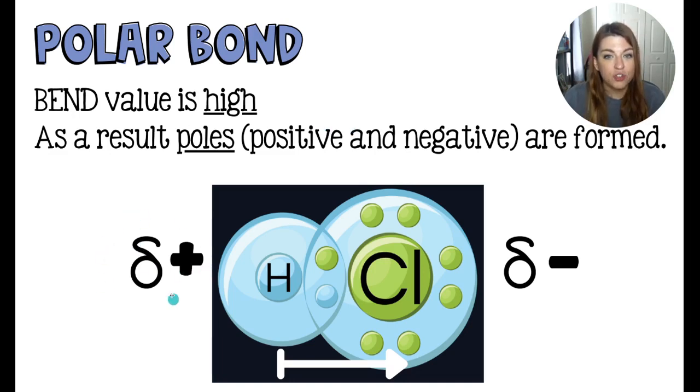Because hydrogen's electron wasn't entirely stolen, it's a partial positive. And because chlorine hasn't entirely stolen the electron, it is a partial negative. And that's how you'd indicate it.